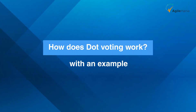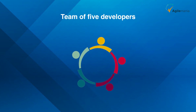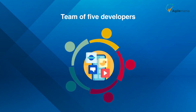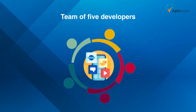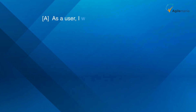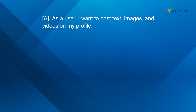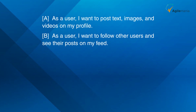Let me explain it with an example. Suppose you have a team of five developers who are working on a social media app. They have the following user stories in their product backlog: A — as a user, I want to post text, images, and videos on my profile; B — as a user, I want to follow other users and see their posts on my feed.